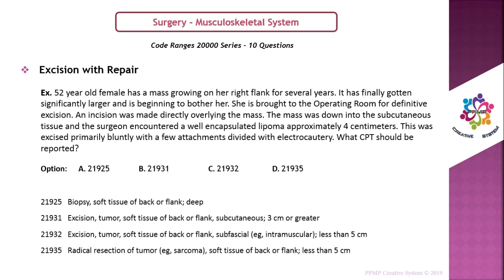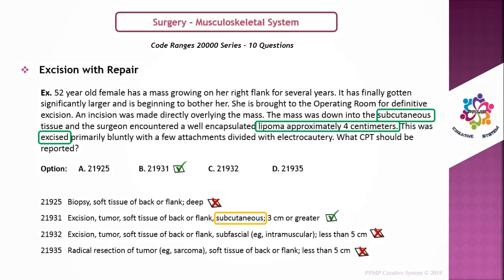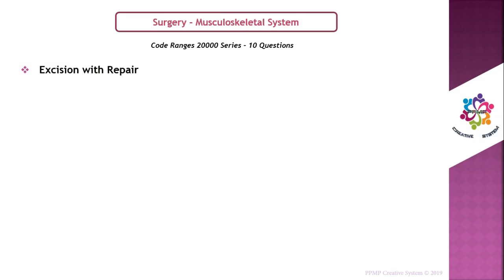Coding tips for excision with repair: identify whether the excision was made up to muscle level or not — examples include sarcoma, lipoma, soft tissue mass, or lesion. Identify the purpose of excision — whether for biopsy or removal. Eliminate the one-series intermediate or simple repair code for the same site. Lead the code based on depth in centimeters. In the first example, the answer is option B. This is an excision procedure, so eliminate options A and D. The procedure was done at the subcutaneous layer, so eliminate option C — the final answer is B.